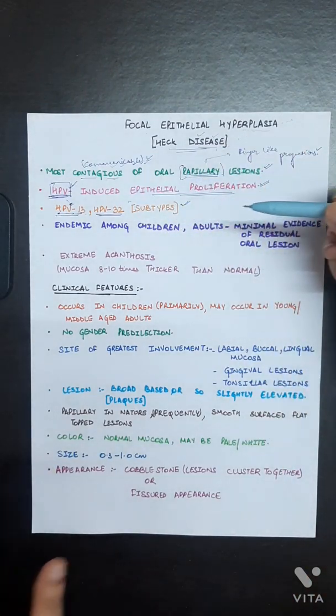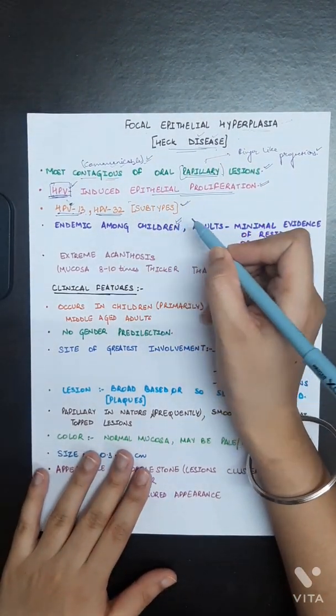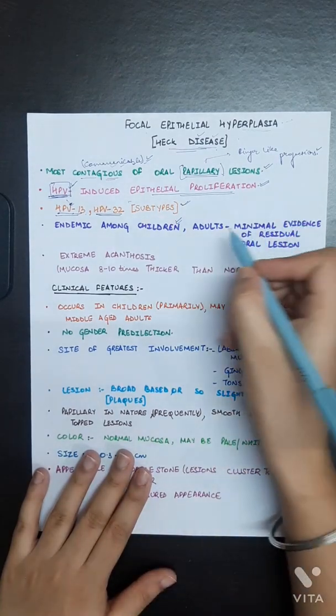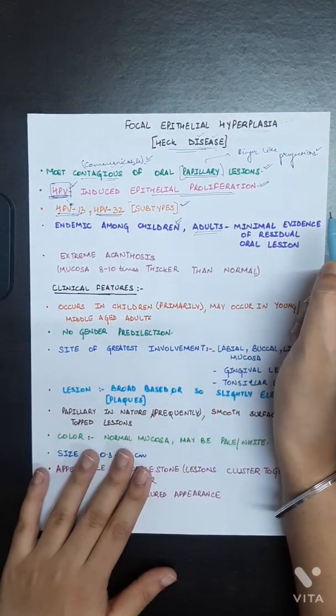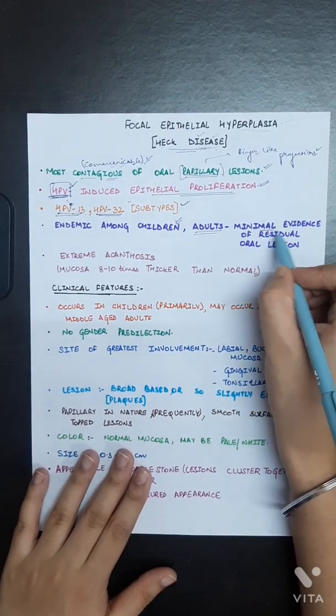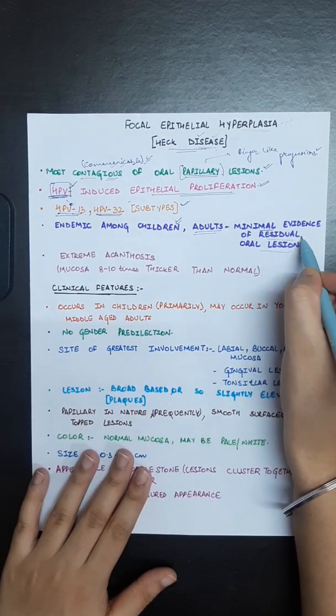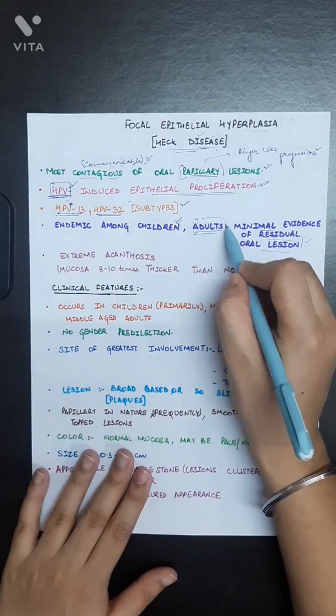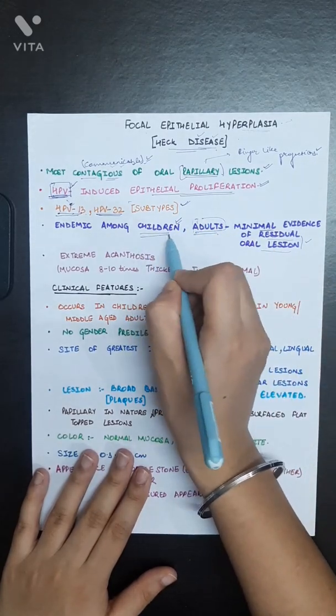This is endemic among children. In adults it is also seen, but the evidences are very rare. Minimal evidence of residual oral lesions are seen in adults, but it is more common in children.